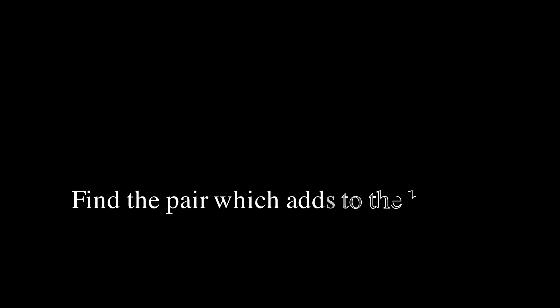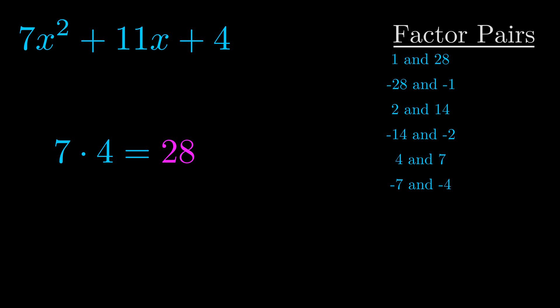The b value is the coefficient on the x term. That's the middle term, the one that we haven't done anything with yet. And really, this is the only factor pair that we need.